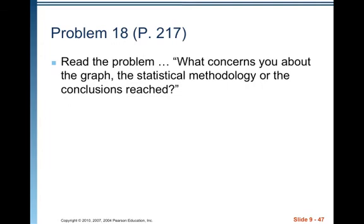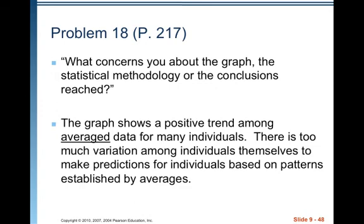Problem 18, let's look at that one. Okay. It's about grades and SAT scores. So go ahead and look at that. It might be interesting to you. Okay. So what concerns you about the graph, the statistical methodology, or the conclusions reached? The graph shows a positive trend among average data for many individuals. There is too much variation among individuals themselves to make predictions for individuals based on patterns established by averages. That's a problem. That's a problem. There's no way to recover it.